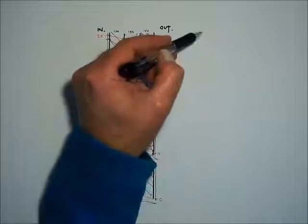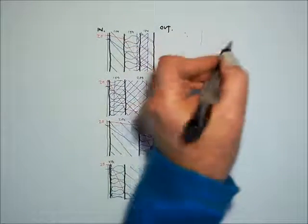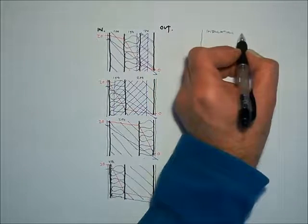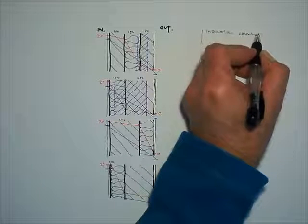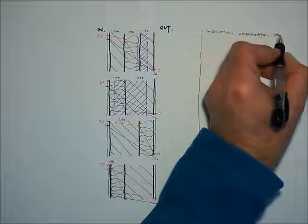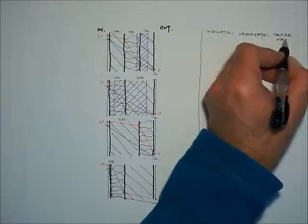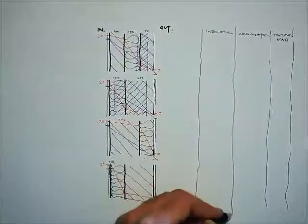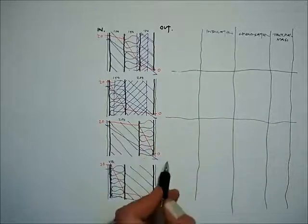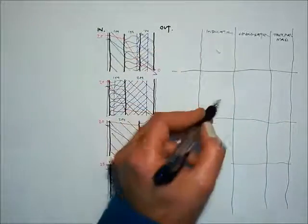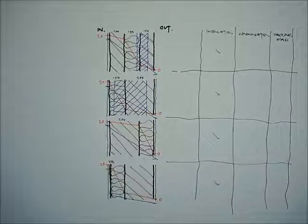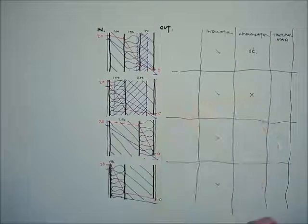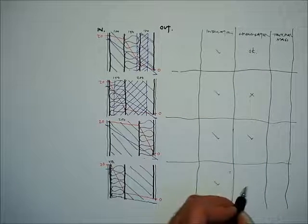So if we were to draw a table to analyse this construction: insulation, condensation, thermal mass. The insulation level is good in all four cases, condensation is okay in this one, it's bad in this one, it's great in this one, it's okay in this one.